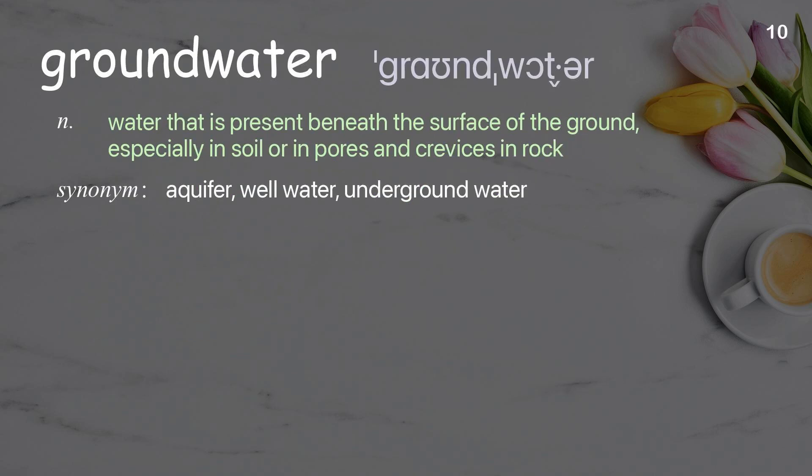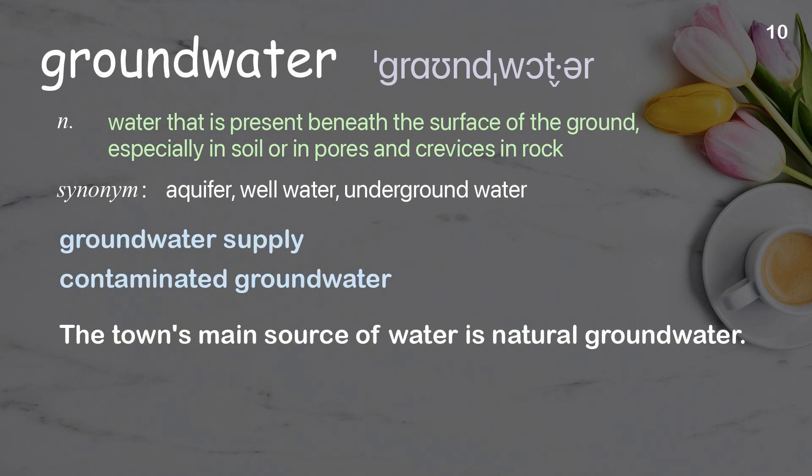Groundwater. Water that is present beneath the surface of the ground, especially in soil or in pores and crevices in rock. Examples: Groundwater supply. Contaminated groundwater. The town's main source of water is natural groundwater.